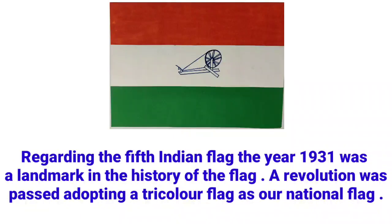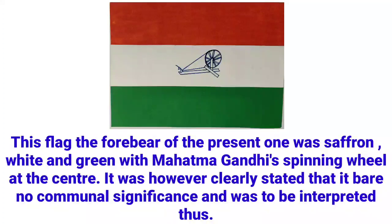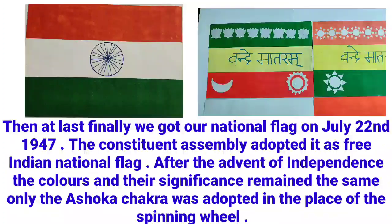Regarding the fifth Indian flag, the year 1931 was a landmark in the history of the flag. A resolution was passed adopting a tricolour flag as our national flag. This flag, the forerunner of the present one, was saffron, white and green with Mahatma Gandhi's spinning wheel at the centre. It was however clearly stated that it bore no communal significance and was to be interpreted thus.